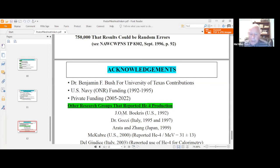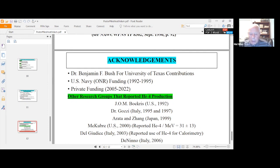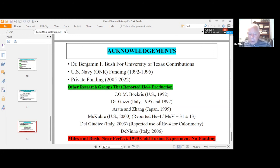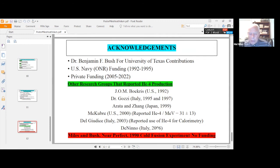And if you look over the histories, other people followed and found helium-4. John O. Bockris was one of the early ones, 1992. Dr. Gozzi in Italy, 1995 and again in 1997. Arata and Zhang in Japan, 1999. McKubre in the U.S. in 2000 at ICCF meeting, and Del Gozzi, Italy in 2003, and DiNino in Italy, 2006. There are probably more, but these are the main ones, I think, that did these kind of studies, calorimetry studies and measuring helium-4. Okay, thank you for your time and attention.